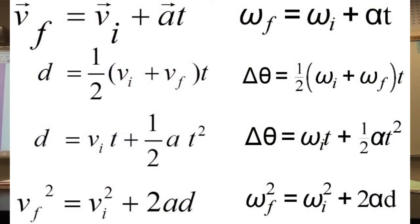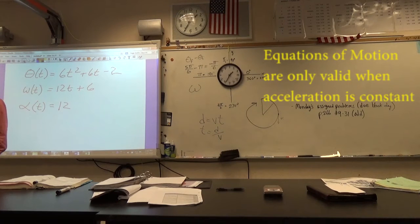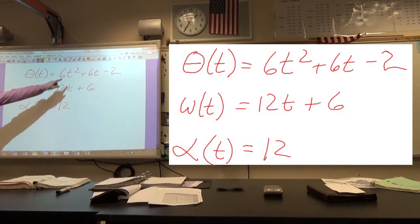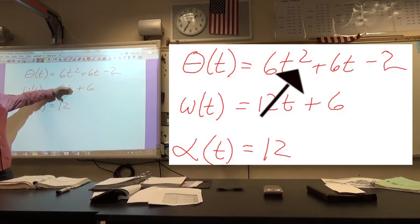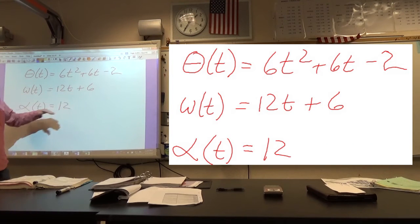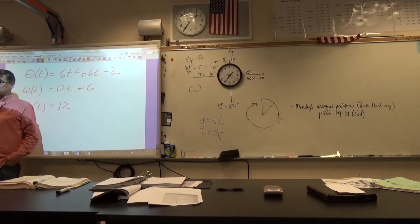There are many similarities even though the variable names differ — we still have displacement, velocity, and acceleration, just now for angular motion. As with the linear equations, the angular equations of motion are only valid when acceleration is constant. A quick rule of thumb: if the power on t in your angular position equation is 2 or less, acceleration will be constant after taking the derivative twice. If it's 3 or higher, acceleration varies with time and you must use calculus directly.